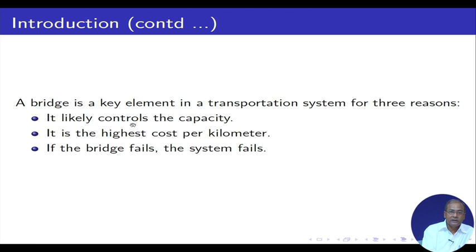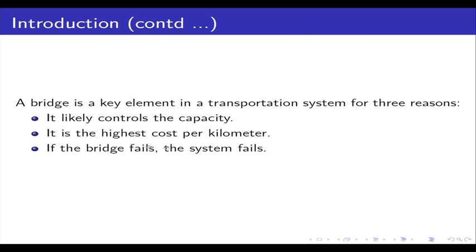It likely controls the capacity. It has the highest cost per kilometer — if you consider any road transportation system, the construction cost generally comes in the range of 2 crores per kilometer per lane. Originally when it started around year 2000, it was about 1 crore Indian rupees per kilometer per lane, meaning for a 4-lane highway, 1 kilometer of road would cost 4 crores. Now it may come around 8 crores, so about 2 crores per kilometer. And third, if the bridge fails, the system fails — like the neck having a problem, your whole system will collapse.